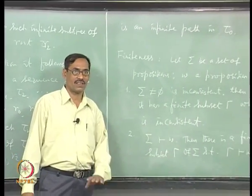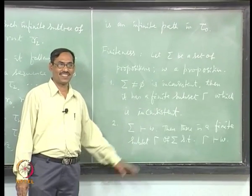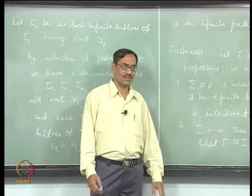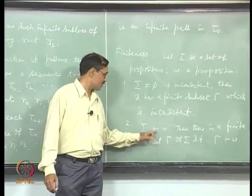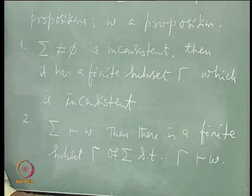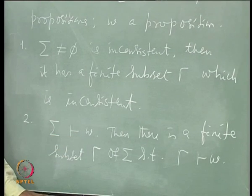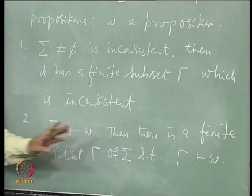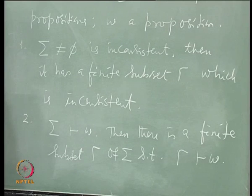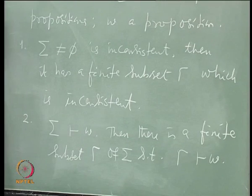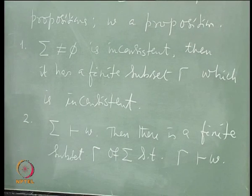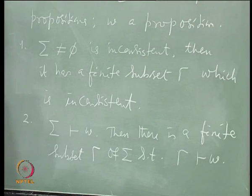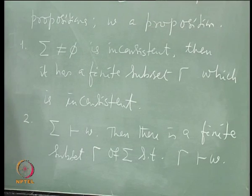All the while, we have not come to semantics yet. We are still in the tableau, in the proof system — consistency and entailment in the proof system only. We have to come to that slowly. Now, suppose Σ entails W in PT. That means there is a closed tableau for Σ ∪ {¬W} by definition. So we want to produce a Γ ⊆ Σ such that Γ ∪ {¬W} has a closed tableau.